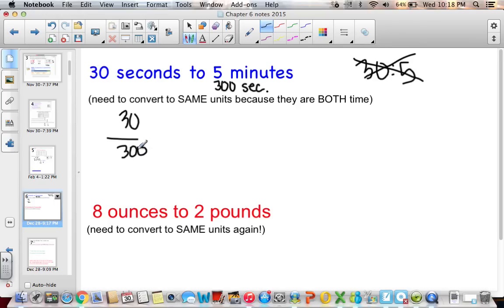So then if we have 30 over 300. I know that they can both be divided by 10. So I'm going to do that first. 3 over 30. Dividing by 10, it's easy to just drop that last zero. And now I know that they can both be divided by 3. So then I end up with 1 to 10 is what I would say. So for every second that it takes me to do whatever it's talking about here, it's going to take me 10 seconds to do whatever it's talking about there.